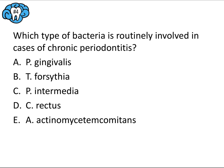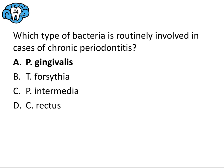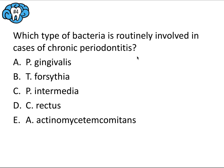Question four: which type of bacteria is routinely involved in cases of chronic periodontitis? This is name recognition. From the plaque video: AA bacteria is associated with the aggressive type, whereas P. gingivalis is for the chronic type — so the answer is A. P. intermedia and C. rectus are part of the orange complex, which isn't as pathogenic as the red complex. Remembering the link between P. gingivalis and chronic periodontitis makes this very straightforward.